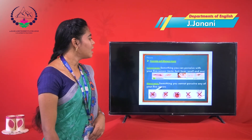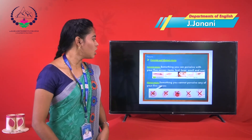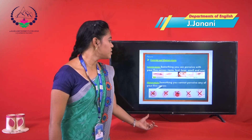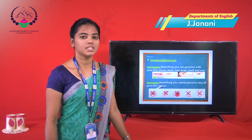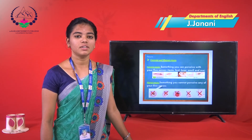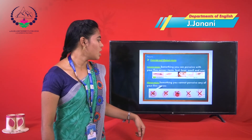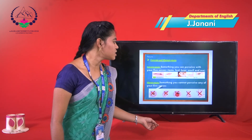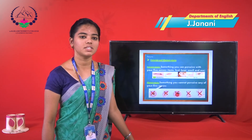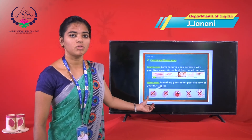Then another type: concrete and abstract noun. Concrete noun is something you can perceive with the five senses — taste, feel, hear, and smell. Abstract noun means something you cannot perceive with any of the five senses. It is called an abstract noun.